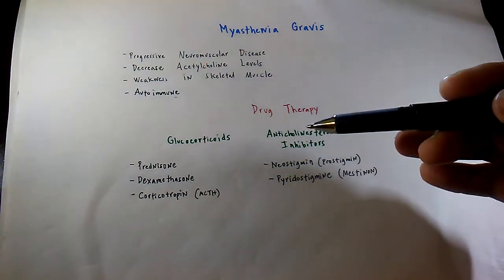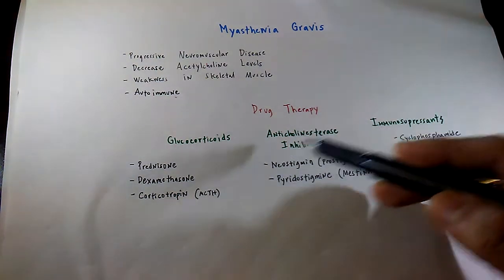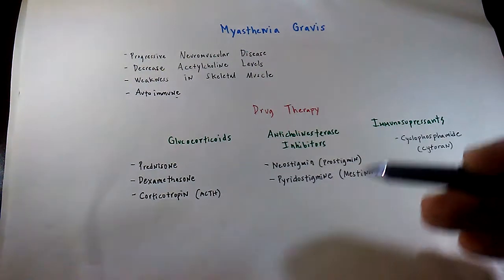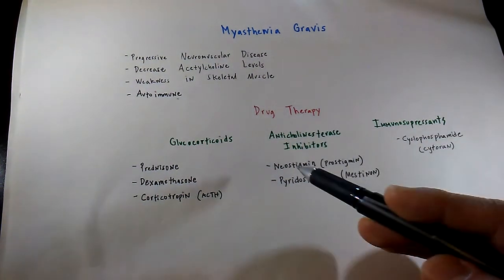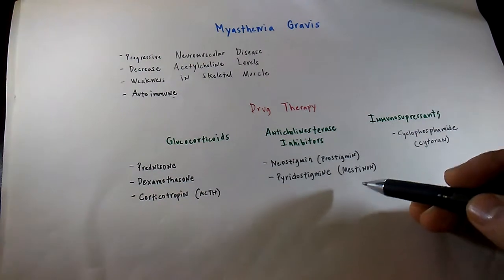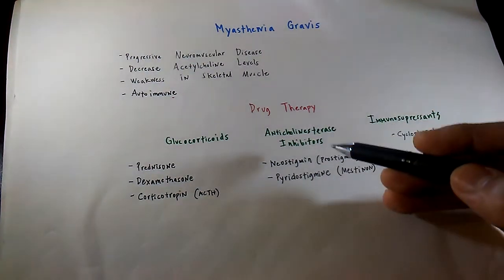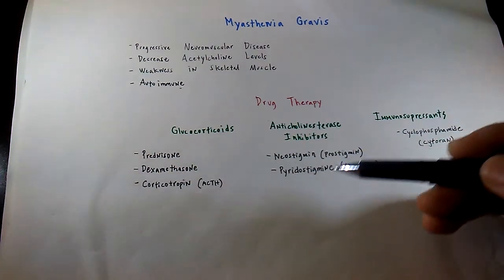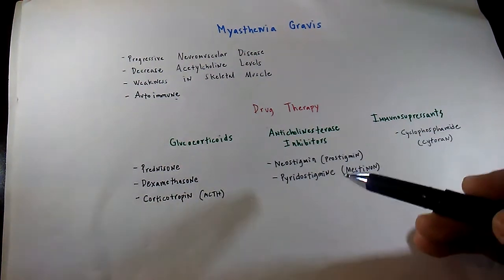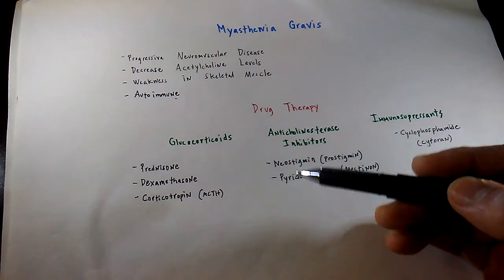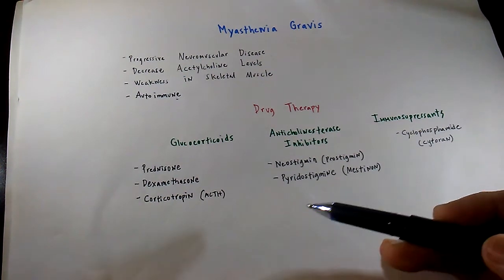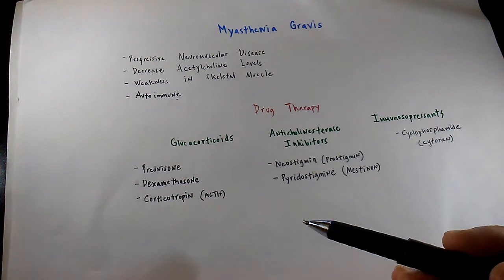Let's talk about anticholinesterase inhibitors. Basically, it inhibits anticholinesterase from breaking down acetylcholine, which as a result obviously increases the level of the neurotransmitter acetylcholine. The main drugs we need to take note of are neostigmine, which is Prostigmin, and pyridostigmine, which is Mestinon. The main side effect we need to take note of for a patient taking anticholinesterase inhibitors would be the effect it has on the parasympathetic nervous system, or PNS. It basically slows things down, so the main side effects to pay attention to would be hypotension and bradycardia.